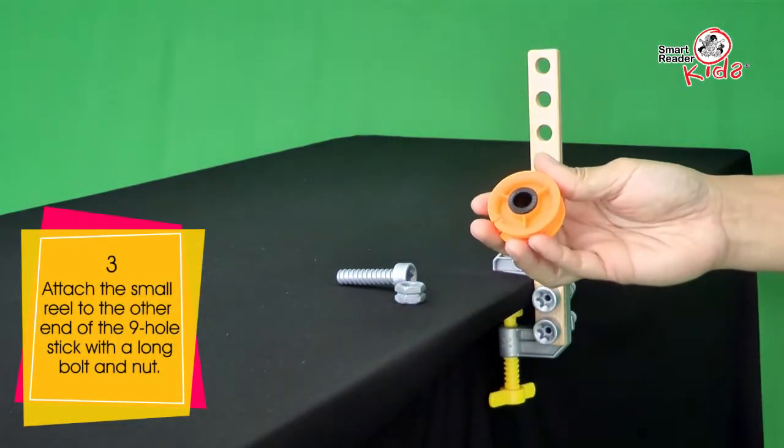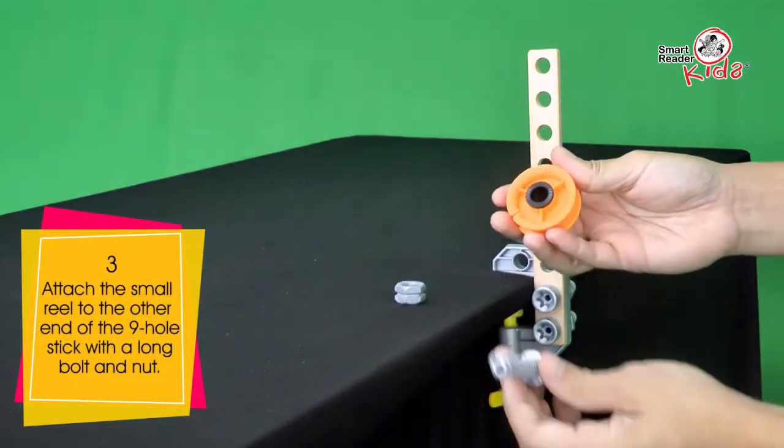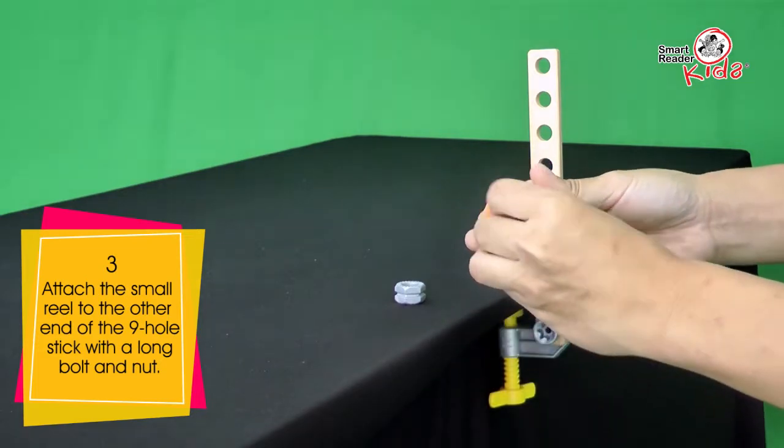Attach the small reel to the other end of the 9-hole stick with a long bolt and nut.